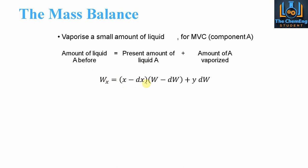This is similar to what we would do in a plug flow reactor proof balance. If this is a little unfamiliar, there'll be a link in the description to our mass and energy balance course where you can see the full derivation for plug flow reactors using this nomenclature. Essentially what we're saying is we're taking a chunk of our system — this here — and this would be our DX and DW.